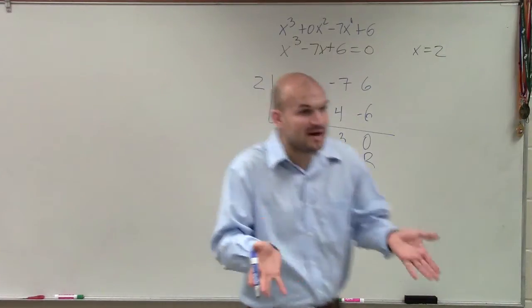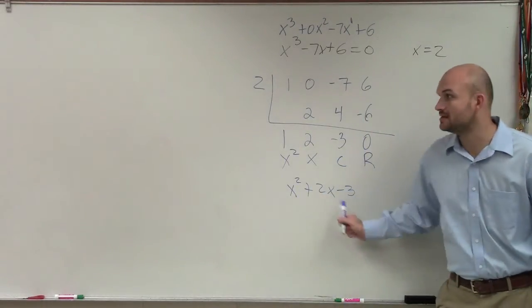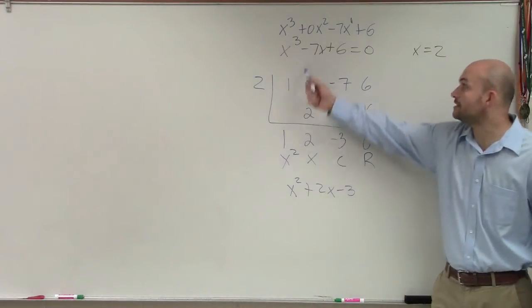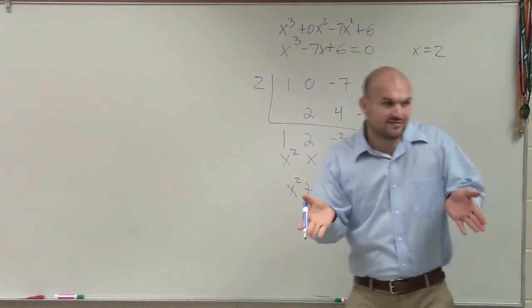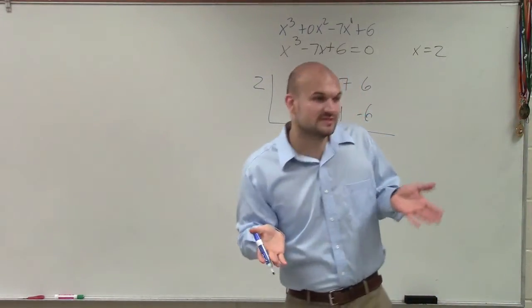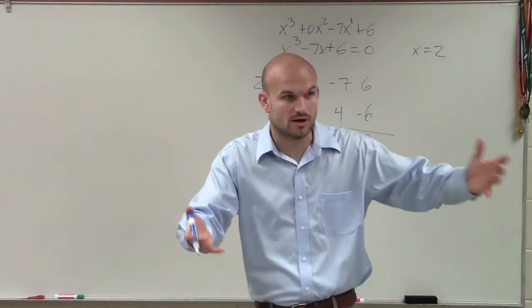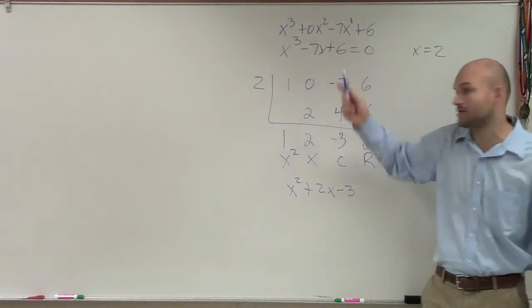Now remember to think about this as our division algorithm. This times our divisor is going to equal our polynomial. Remember 12 divided by 3 is 4, and 3 times 4 equals 12. Your quotient times your divisor gives you your polynomial.